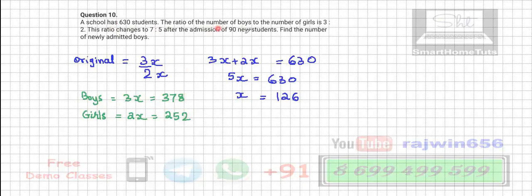Now after admission, 90 new students total are admitted. Find the number of boys from that. So we will take let number of boys admitted is equal to x.